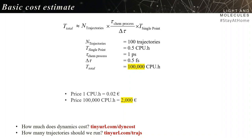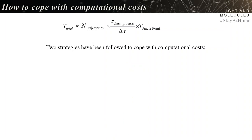You may ask yourself what is the best way of allocating your funds. I'm always telling the people who work with me: if you can solve your scientific problem without doing dynamics, you are on the profit side — it's better. But if you really need to do dynamics, there are two strategies to cope with the computational costs.